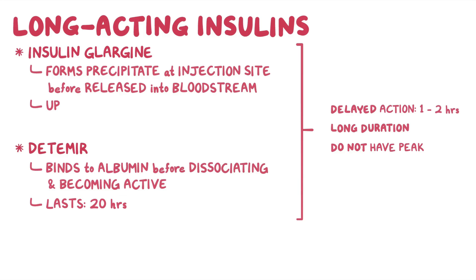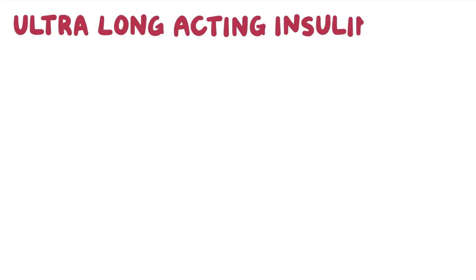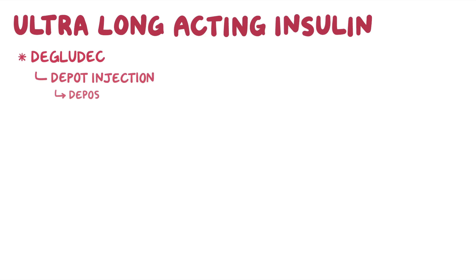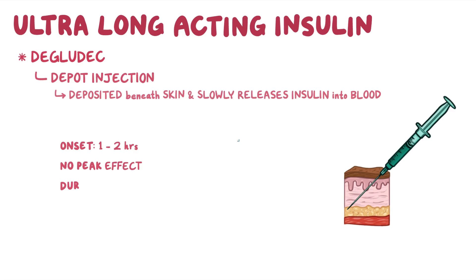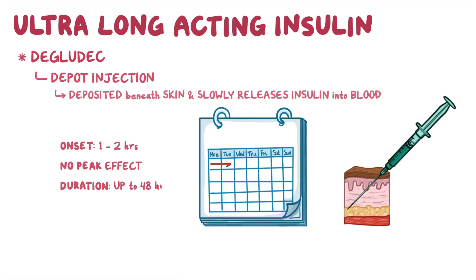Glargine can last for up to 24 hours. Ultra-long-acting insulin is a relatively new preparation called insulin degludec. Degludec is a depot injection, meaning the medication is deposited beneath the skin and slowly releases insulin into the blood. Its onset of action is between 1 to 2 hours, with no peak effect, and its duration of action can last up to 48 hours.